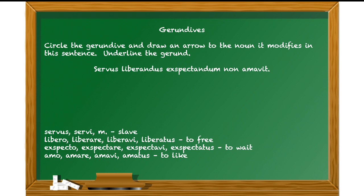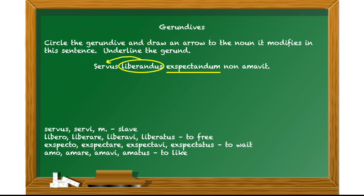Let's take an example. Circle the gerundive in this sentence, draw an arrow to the noun it modifies, and underline the gerund. Pause the video and press play when you're ready. You should have circled 'liberandus' and underlined 'expectandum'. They both have an 'nd', so that tells you each word is one or the other. 'Liberandus' has the ending 'ndus' — that is not one of the gerund endings; the 'us' is a second declension masculine ending, so it's functioning as the verbal adjective. That's why we draw the arrow from 'liberandus' to modify 'servus'. 'Expectandum' isn't modifying anything — it's the verbal noun. A gerundive has to modify something; a gerund doesn't modify anything.